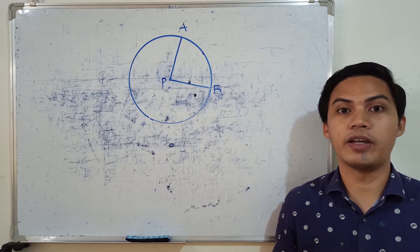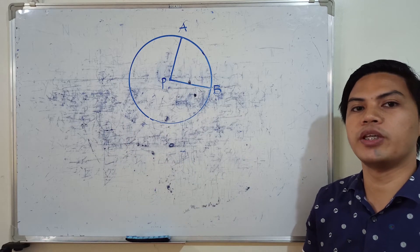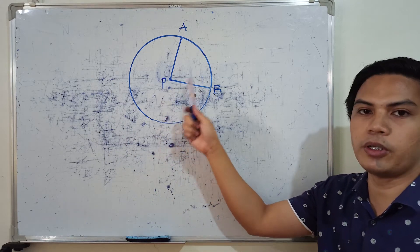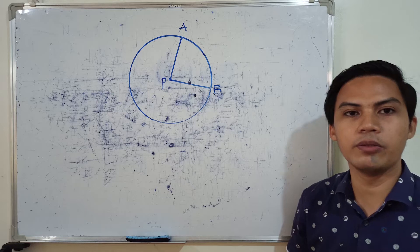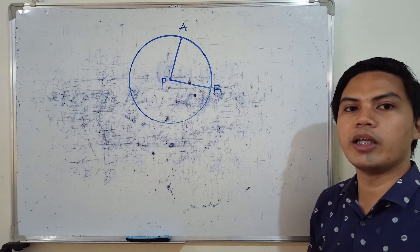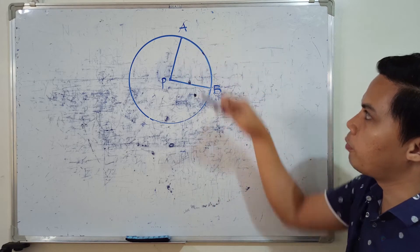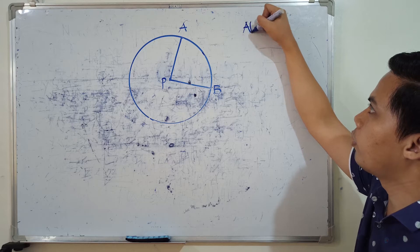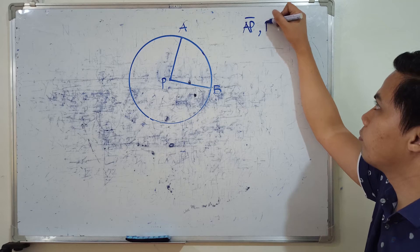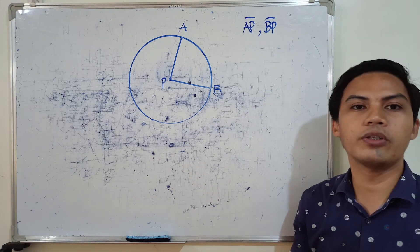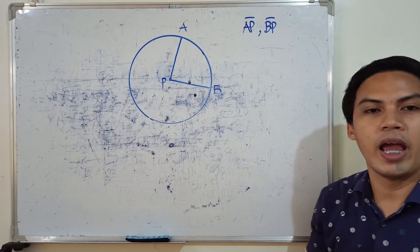Here is an example of a central angle. This is circle P — we can name a circle using its center, so since the center is P, we call this circle P. By definition, a central angle is made up of two radii. The first radius is AP (line segment AP) and the second radius is BP. These two radii meet at the center, which is point P, and they form a central angle.